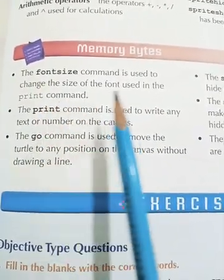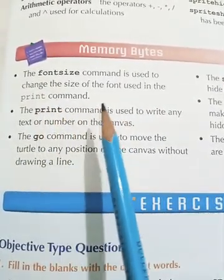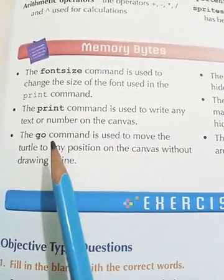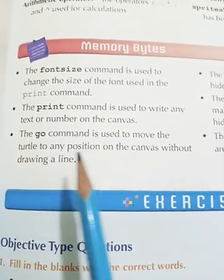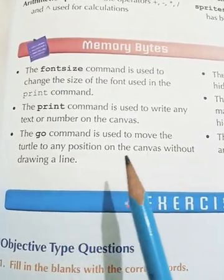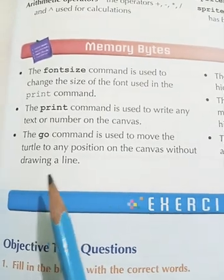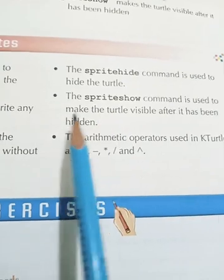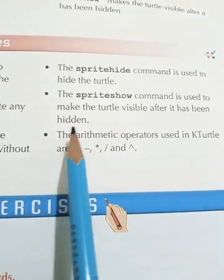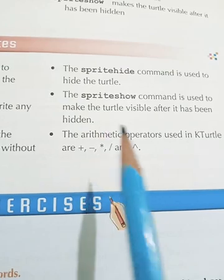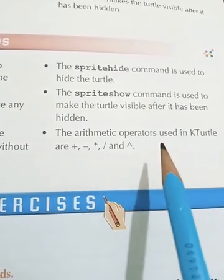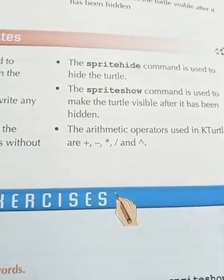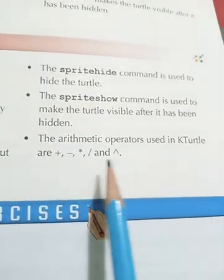Memory bytes recap: The font size command changes the size of the font used in the print command. The print command writes any text or number on the canvas. The go command moves the turtle to any position on the canvas without drawing a line. The sprite hide command hides the turtle, and sprite show makes the turtle visible again. The arithmetic operators in KTurtle are plus, minus, multiplication, division, and power.